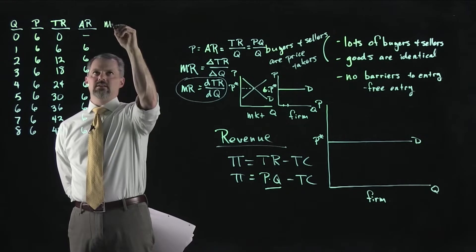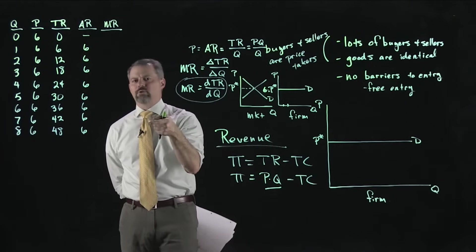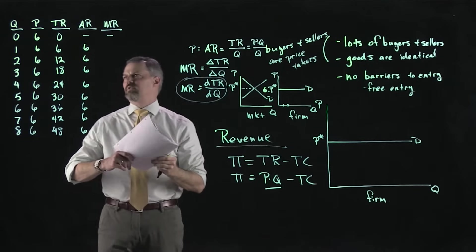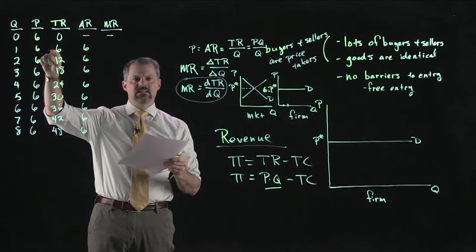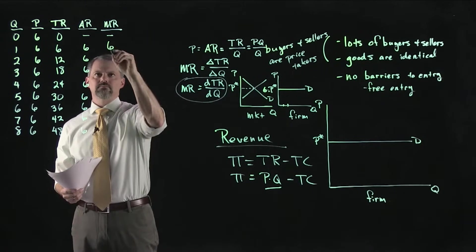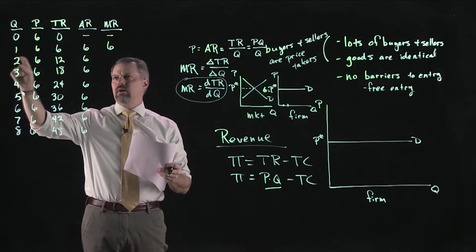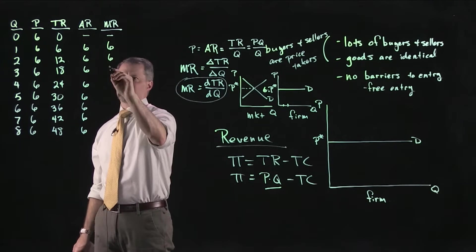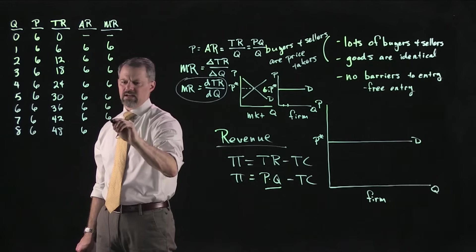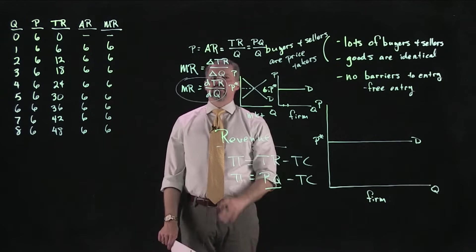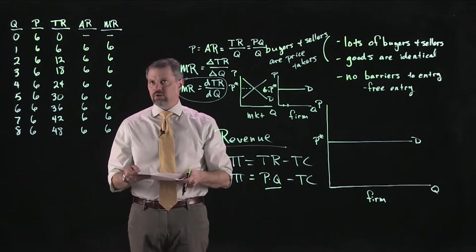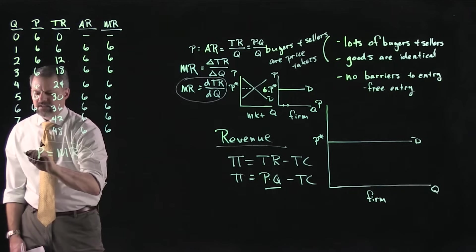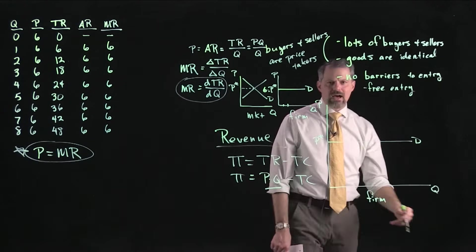When we go from zero to one unit, total revenue goes from zero to six, so the change in total revenue is $6. From one to two, it goes from six to twelve — again a change of $6. From two to three, twelve to eighteen — always changing by $6. So marginal revenue is $6 all the way down. This leads to the first important conclusion: for a perfectly competitive firm, price and marginal revenue are equal. We will see that this is not true for other types of firms.